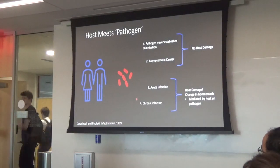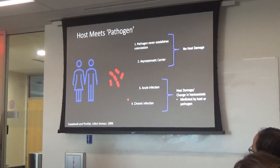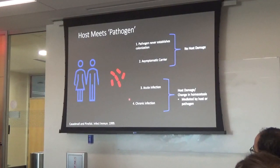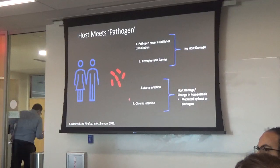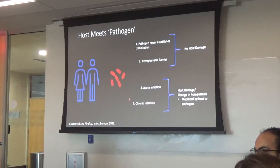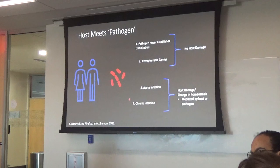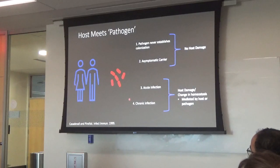When a host — most of the time we're talking about humans — meets a pathogen, there are a few ways to understand that relationship. One paradigm that's been around for about 20 to 25 years is host damage. When a bacteria or other microbe encounters a person, a few things can happen: the host immune system could function normally and prevent colonization or infection, resulting in no host damage or change in homeostasis.